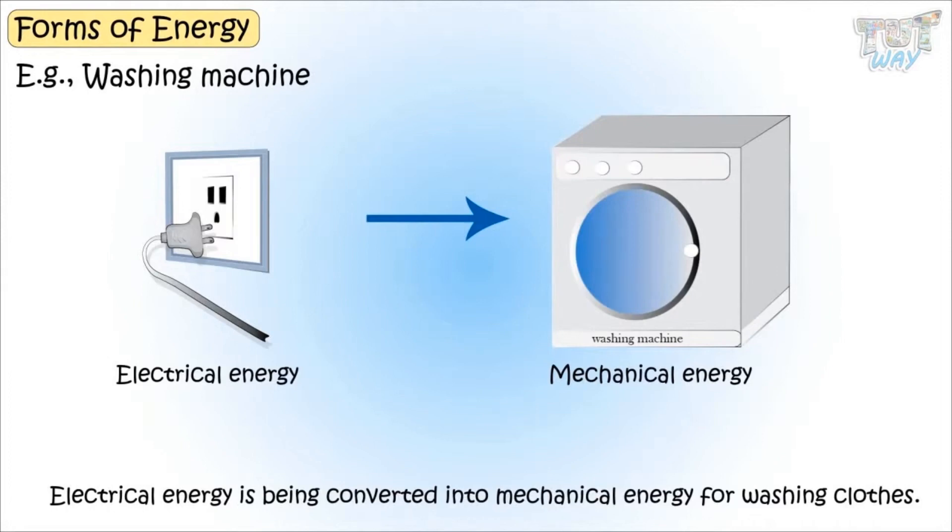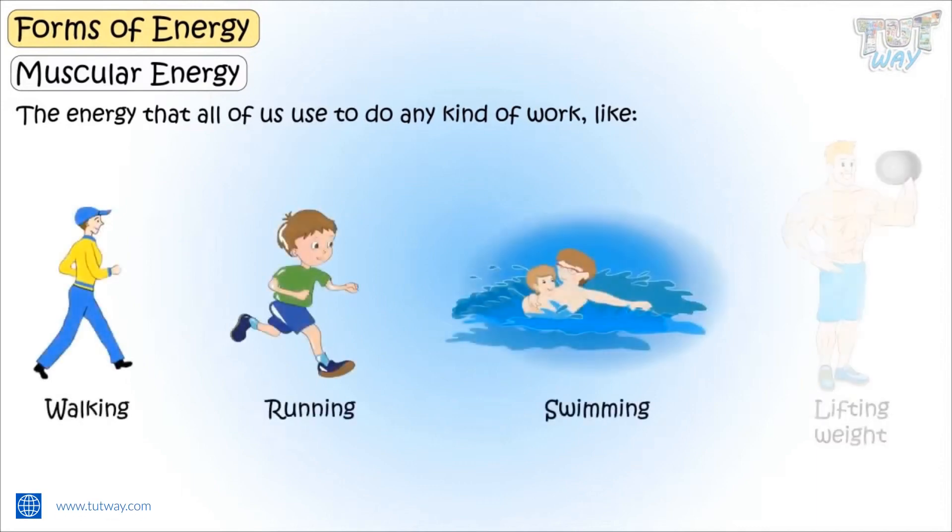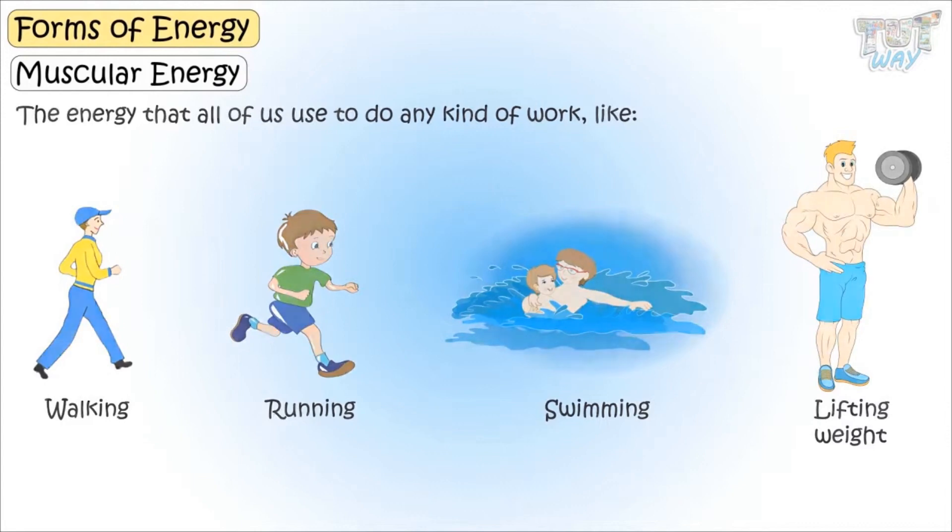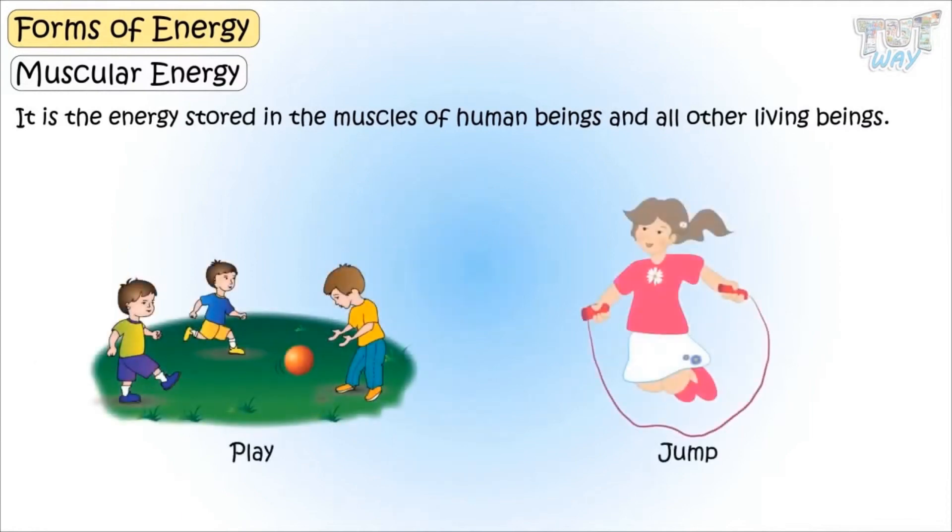Now, let's learn different forms of energy, one by one. Muscular energy. It is the kind of energy that all of us use to do any kind of work, like walking, running, swimming, lifting weights. Any work we do, we use muscular energy. So it's the energy stored in the muscles of human beings and all other living beings. We can play, jump, or do any physical activity using this muscular energy.